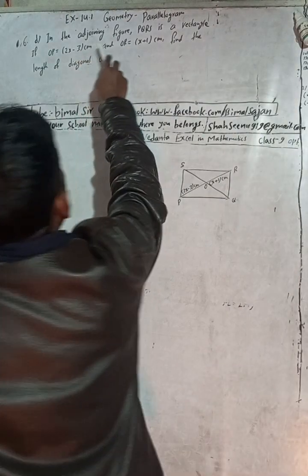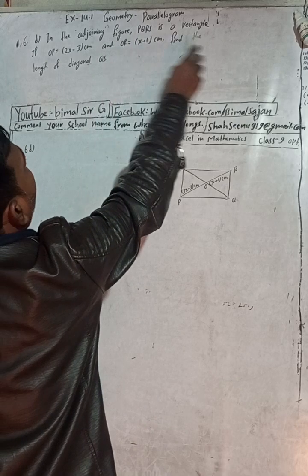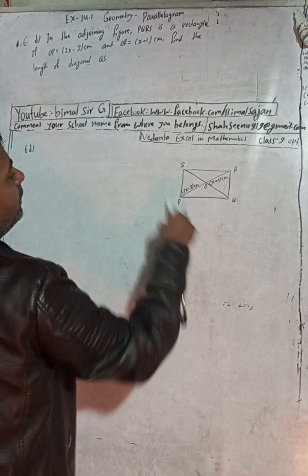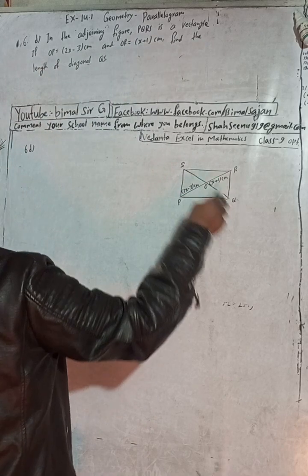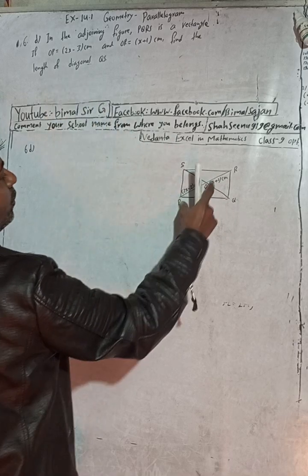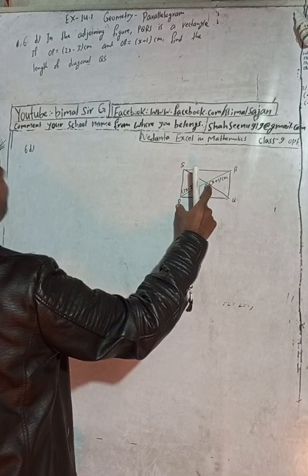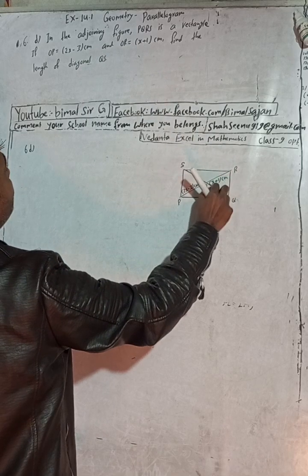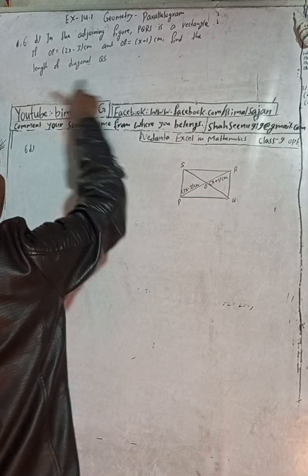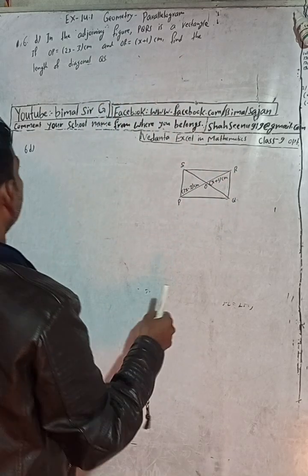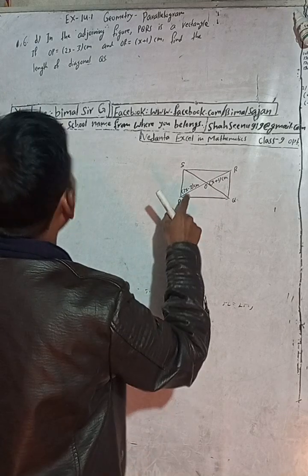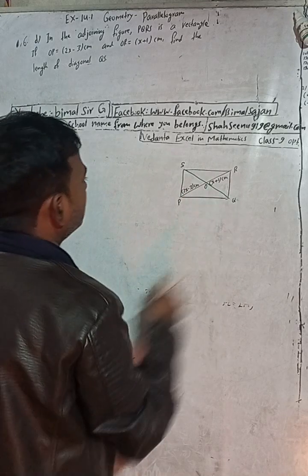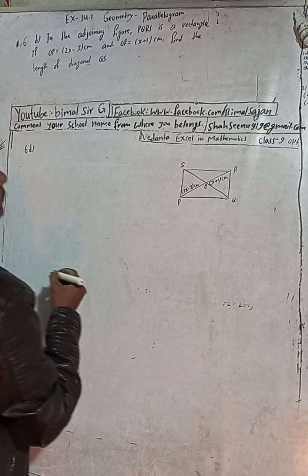This is question number 6D. The question is: in the adjoining figure, PQRS is a rectangle. OP is equal to 2x minus 3 and OR is equal to x plus 1. Find the length of diagonal QS.